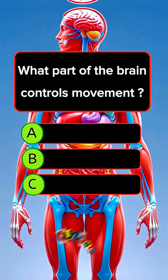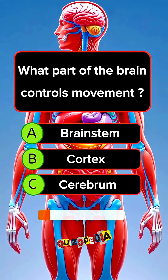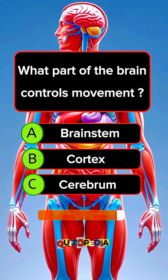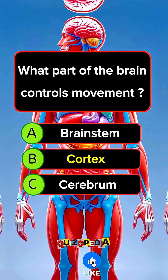What part of the brain controls movement? Answer B. Cortex.